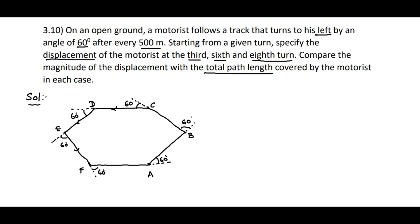The points A, B, C, D, E, F form nothing but a hexagon. Now, we number the turns: turn 1, turn 2, turn 3, turn 4, turn 5, turn 6, turn 7, turn 8.